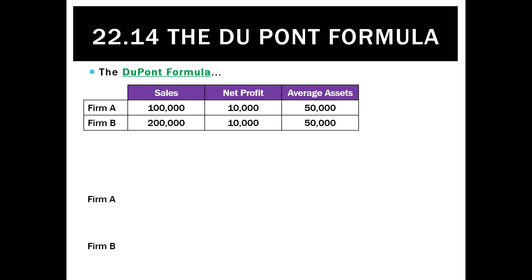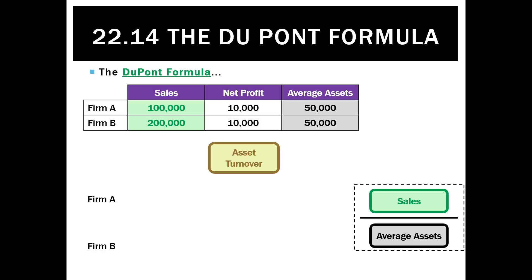To use an example to prove this all works, we have Firm A and Firm B with their sales, net profit, and average assets listed. Starting with asset turnover — sales divided by average assets — for Firm A that's 100 divided by 50, which is 2.0, and for Firm B that's 200 divided by 50, which is 4.0. Just based on that ratio, Firm B is more efficient at turning its assets into sales than Firm A.